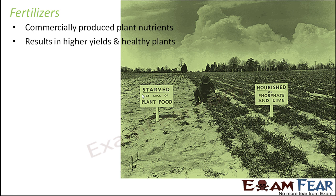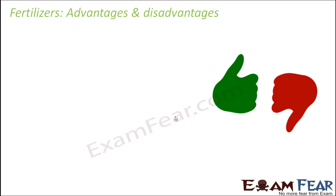Looking at this picture — on the left hand side you see a field which is starved by lack of plant food, whereas on the right hand side you see a field which is nourished on phosphate and lime. These are nothing but nutrients added in the form of fertilizers. There is so much greenery on the right side, whereas there is almost nothing on the left side. So with fertilizers, you can actually improve the yield to a large extent.